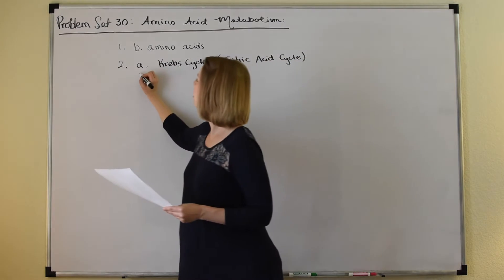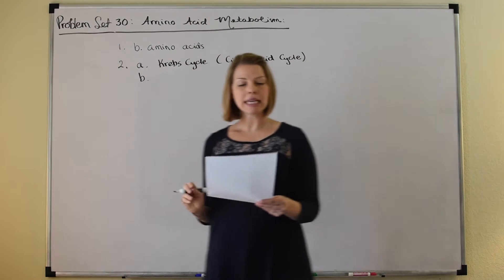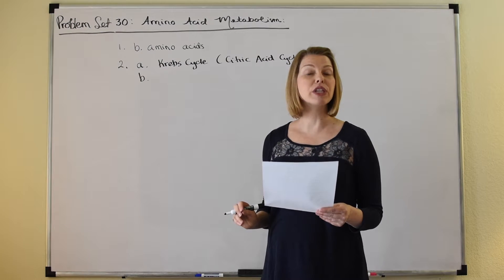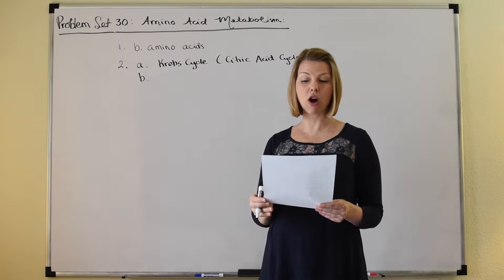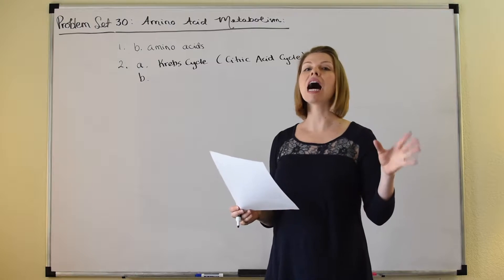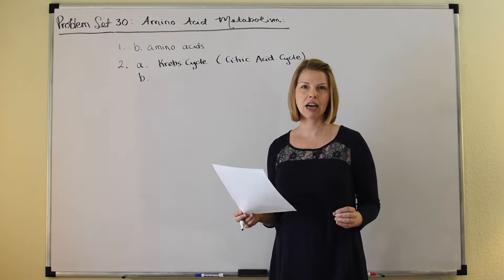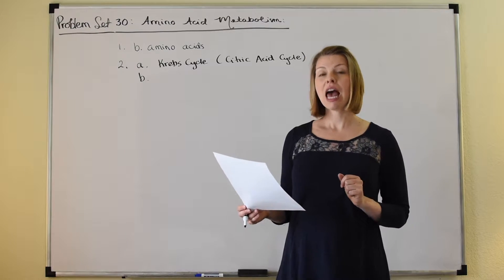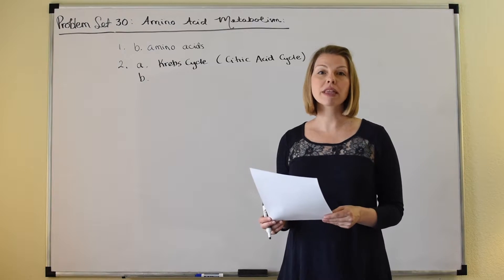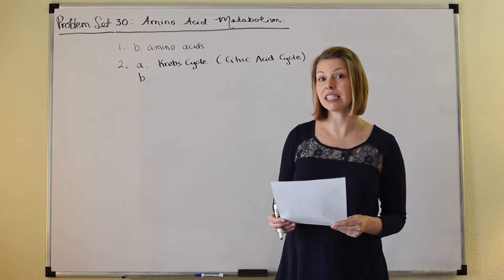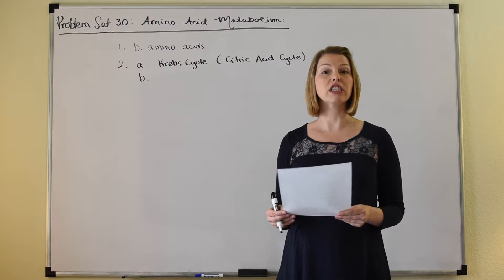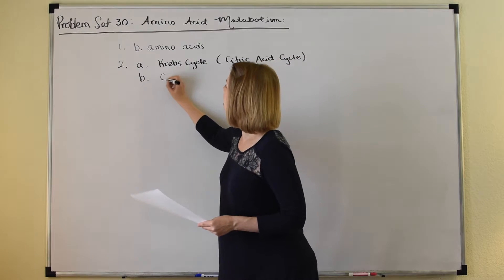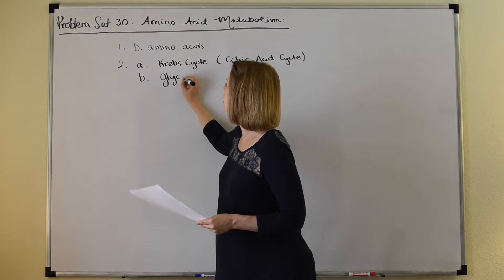B, a ten-step process in which glucose is broken down into two units of pyruvate. Hopefully you recognize that description as describing the process of glycolysis — the breakdown of glucose into two three-carbon units of pyruvate. So that is glycolysis.